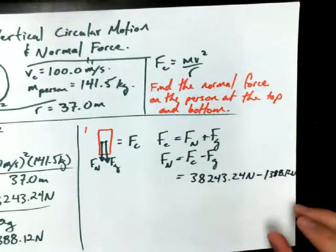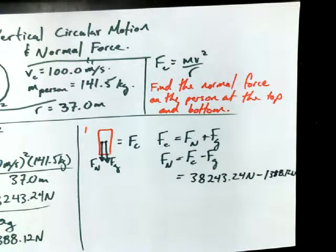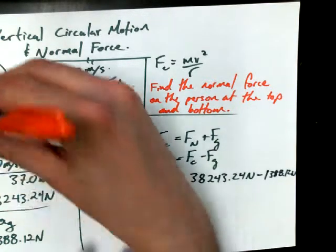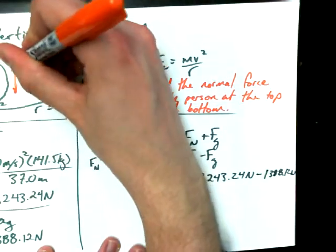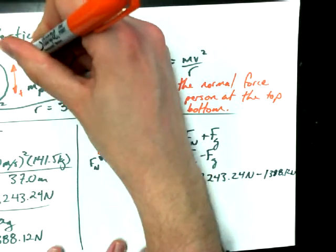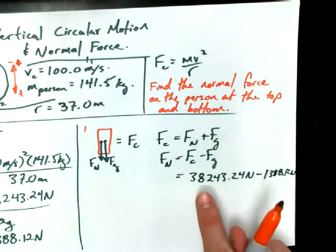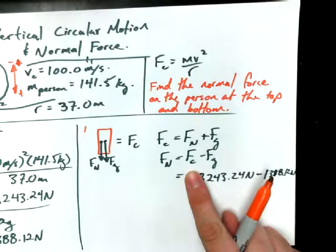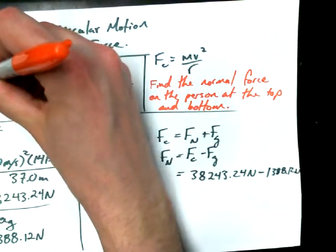So, 38,243.24 newtons minus 1,388.12 newtons. And there's something I forgot about before I wrote this down. What did I forget to consider? Yeah? The reference frame. The reference frame. Oh, man. Well, I hope it doesn't make too much of a difference this time. I'm going to call down negative again. Oh, sorry. I'm going to call down positive. I'm going to call up negative. So, let's see. Fc, when you're at the top, can you see that Fc is down?